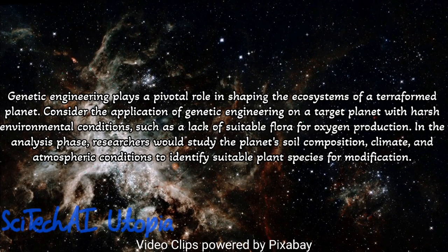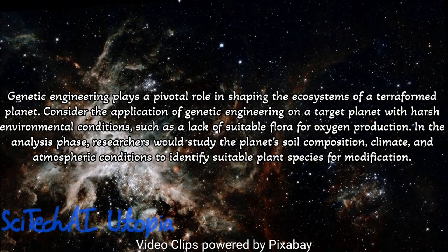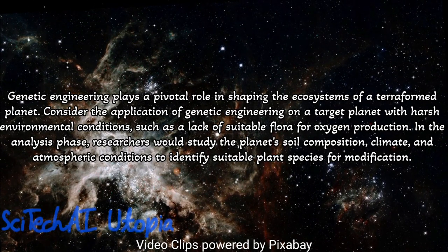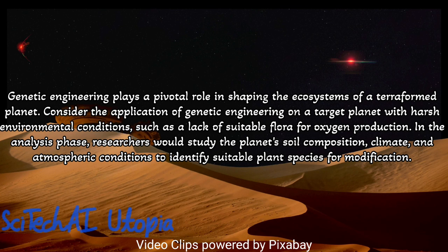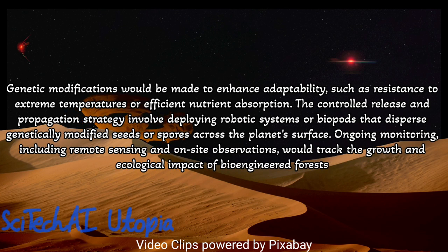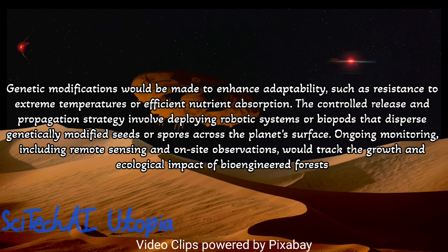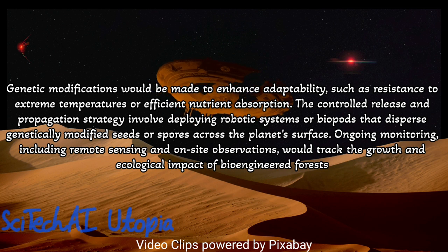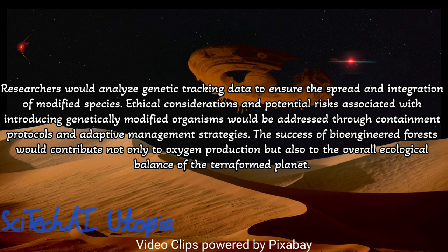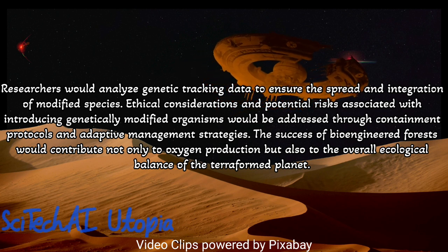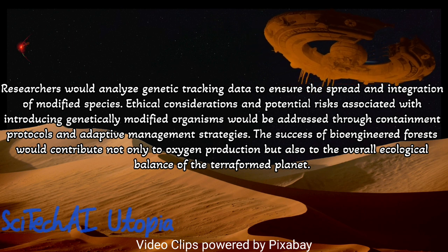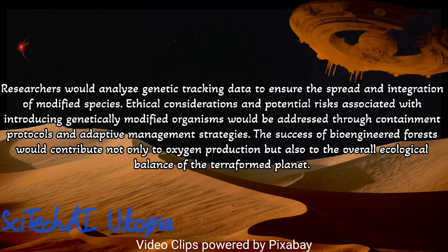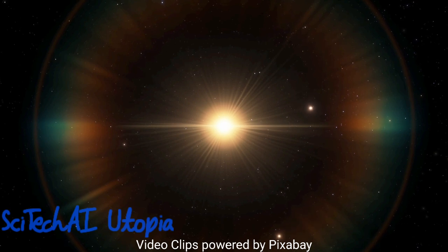Method 5: Genetic Engineering. Conduct a thorough analysis of the planet's existing ecosystems and identify potential genetic modifications needed for organisms to thrive in the new environment. Develop advanced genetic engineering techniques to create organisms capable of adapting to the altered atmospheric and environmental conditions. Design synthetic organisms with enhanced resilience, resource utilization, and the ability to contribute positively to the terraforming process, such as releasing oxygen or nitrogen-fixing bacteria. Implement controlled release of genetically modified organisms into the environment, considering ecological impact assessments and potential interactions with existing life forms.